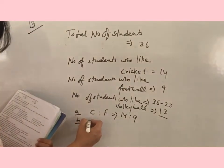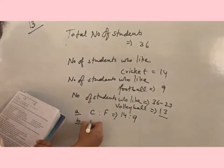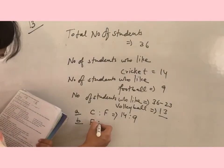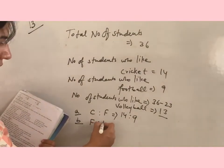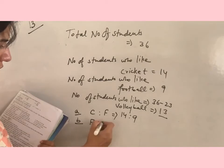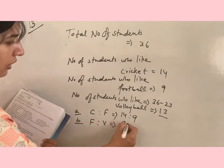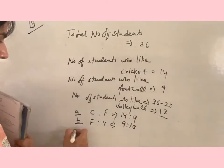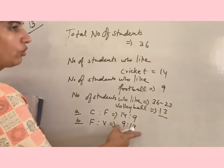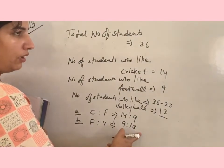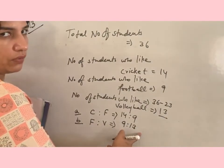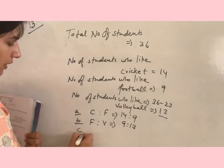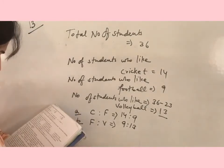In part B, number of students who like football and number of students who like volleyball: 9 ratio 13. Again, they both are not going with the same table.